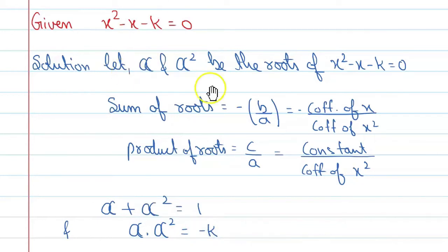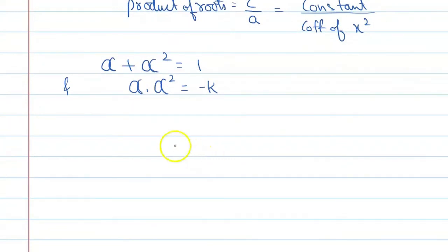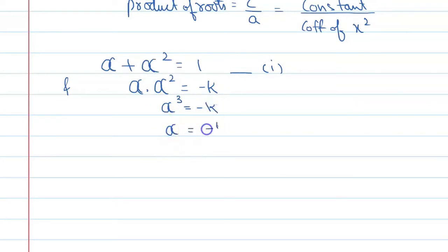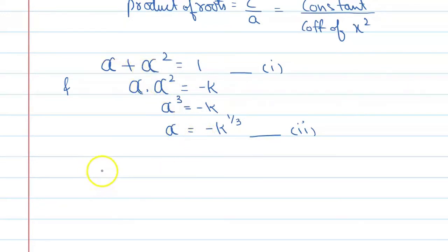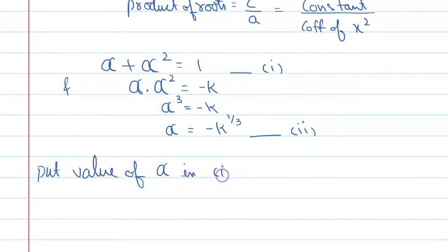अब देखिए, अगर हम इसे आगे solve करेंगे, उससे पहले हम यहां mark कर देते हैं — this is equation number 1. और इसको आप further solve करते हैं तो देखिए: alpha cube is equal to minus k, and alpha is equal to minus k raised to power 1 by 3. Mark this equation number 2. Now put this value of alpha from equation 2 into equation number 1.